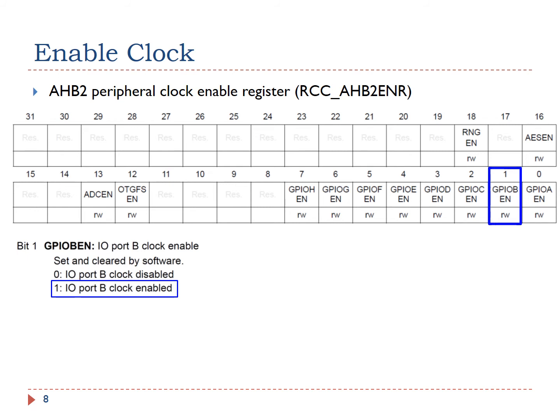Specifically, the clock of port B is controlled by the AHB2 peripheral clock enable register. We need to set bit 1 of this register to 1. That is, we need to set GPIO B enable bit to 1.